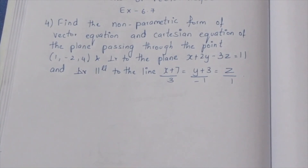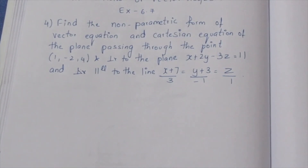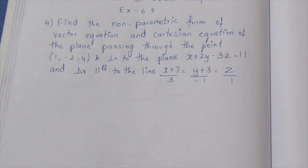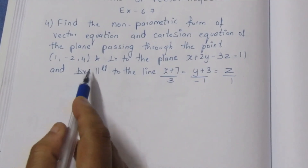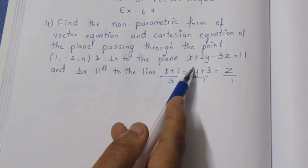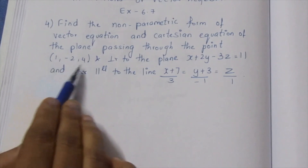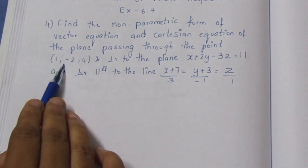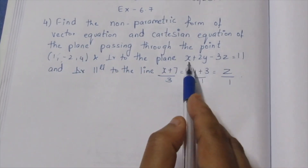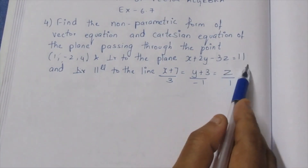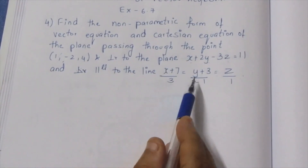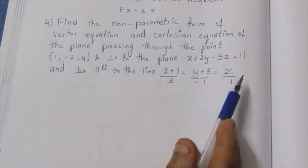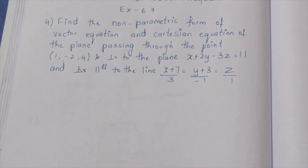Find the non-parametric form of a vector equation and a Cartesian equation of the plane passing through the point (1, -2, 4) and perpendicular to the plane x plus 2y minus 3z equals 11, and parallel to the line (x+7)/3 = (y+3)/(-1) = z/1.